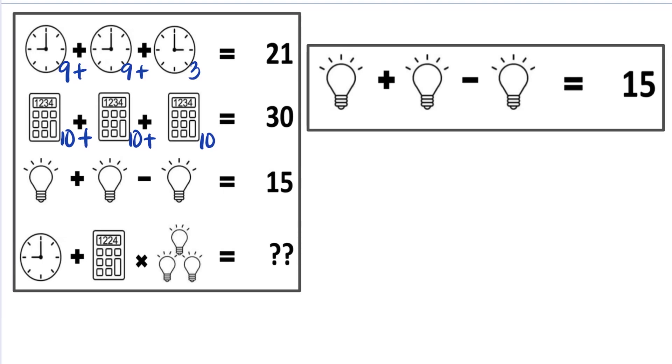Now let's zoom in to line 3. A bulb plus a bulb minus a bulb is equal to 15. In this equation, I'd like you to look at the last two bulbs. What is the value for the bulb minus bulb?